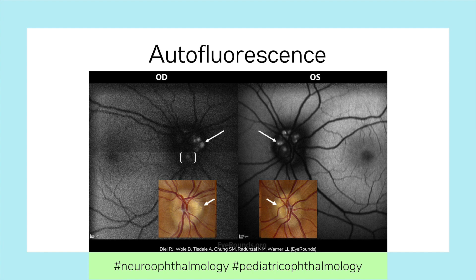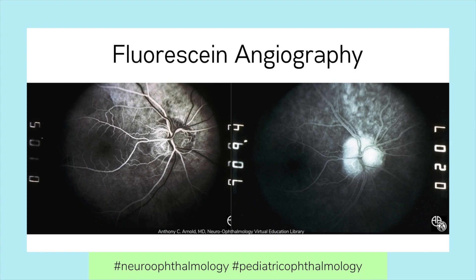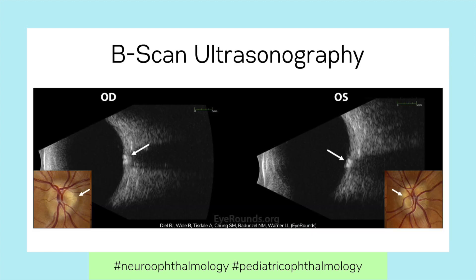Surface Optic Disc Drusen autofluoresce readily, but buried drusen may not be visible on autofluorescence. Fluorescein angiography reveals no leakage in Optic Disc Drusen. If late leakage is present in a patient with visible Optic Disc Drusen, concurrent true optic nerve edema should be considered. B-scan ultrasonography may reveal calcified drusen, which are highly reflective even with decreased ultrasound gain, and can also be used to measure the optic nerve width, which is normal in Optic Disc Drusen but widened in papilledema.